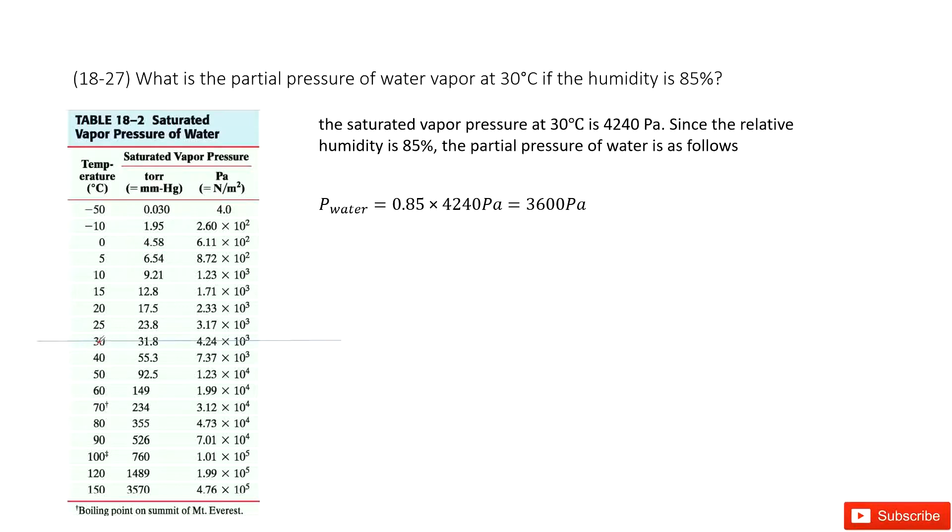The temperature is 30 degrees Celsius. So we can draw a line there. What is the corresponding pressure? 4240 Pa, right? 4240 Pa.